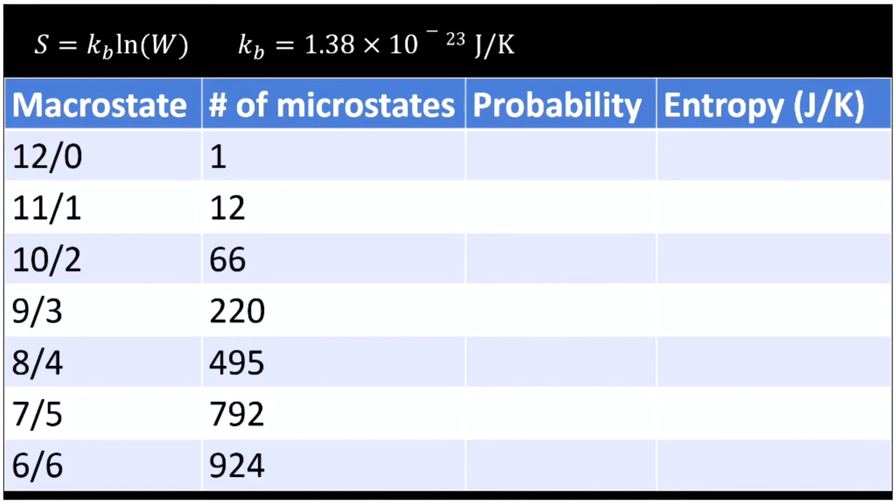Now, how do I get the probability? The probability of finding each one of those different macrostates is the number of microstates in that macrostate divided by the total microstates overall. If I add up all the microstates, so I add up this whole list plus the rest of the macrostates that we didn't list there, we would get a total of 4,096 different microstates. And now what's the probability of each one? Well, the probability of a 12-0 split is 1 divided by 4096. So pretty unlikely. Only 1 out of 4,000 times if you walk into the lab will you see your 12 gas molecules all on one side.